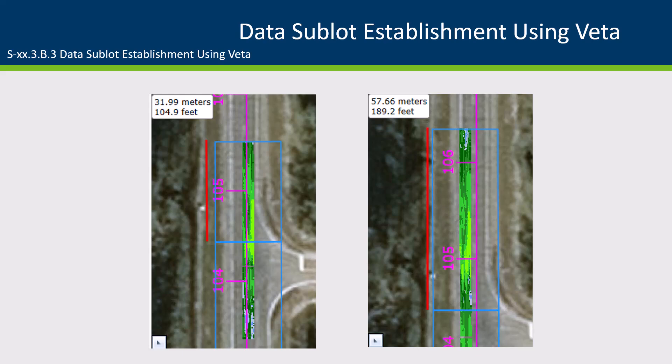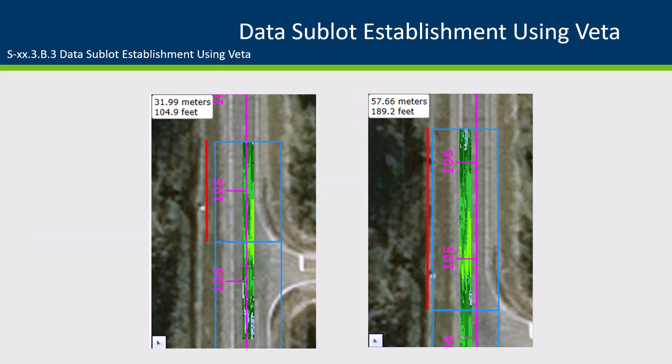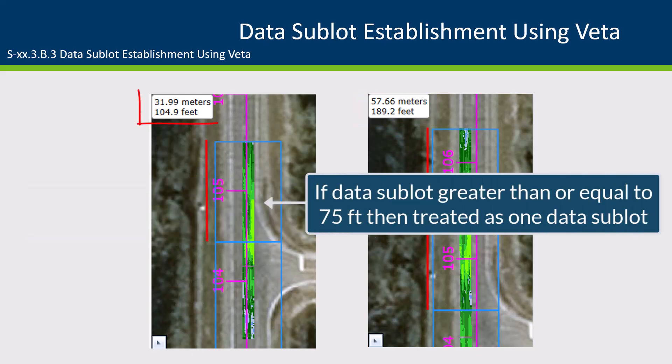The last sublot typically does not equal 150 feet and is therefore treated as follows: when the last sublot is less than 75 linear feet, it is combined with the previous data sublot. When the last sublot is greater than or equal to 75 linear feet, it is treated as one data sublot.